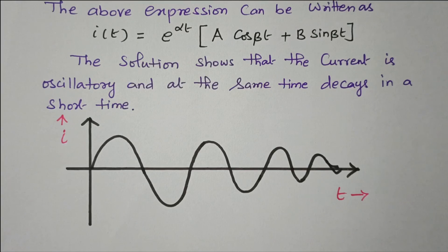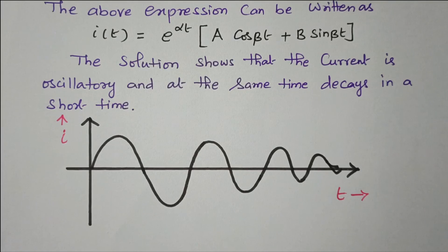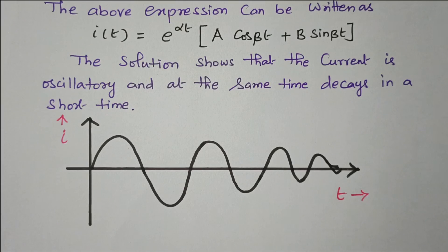In this video we discussed the RLC series circuit transient response. After applying KVL, we obtained three cases: roots real and different gives over-damped response; roots real and equal gives critically damped response; complex conjugate roots give an oscillatory current that decays in a short time. Subscribe the channel for more videos. Soft copy of this material is available in the drive — the link is given in the description box. Thank you for listening.